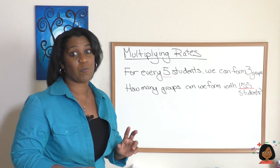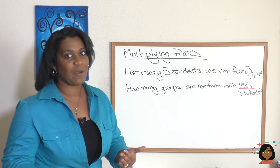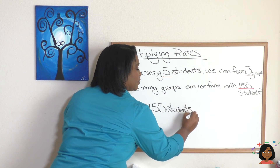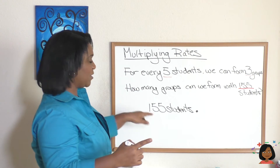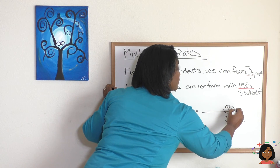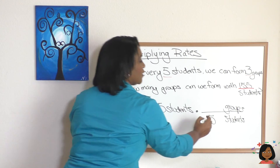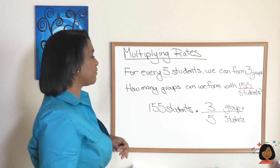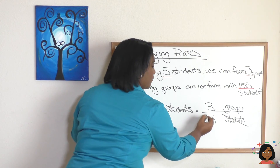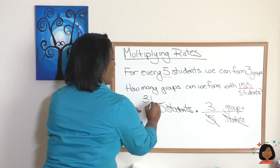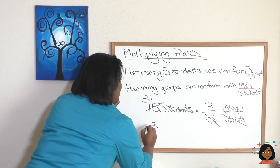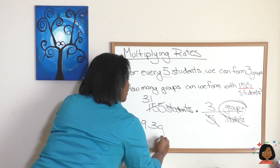Let's try another example: for every five students we can form three groups — how many groups can we form with 155 students? We write down what we're looking for: 155 students. We multiply it times our rate, putting the student part on the bottom so it's students to groups — three groups for every five students. We simplify: cross out students, then 5 into 155 gives 31. Multiply 31 times 3, which is 93 groups.